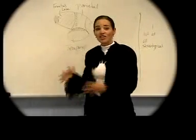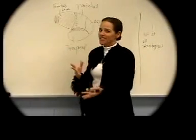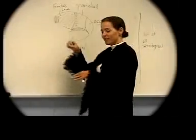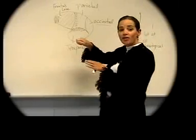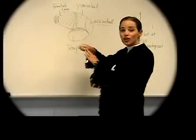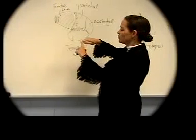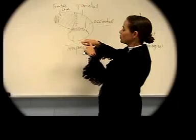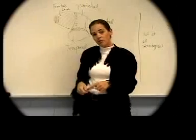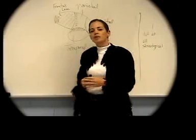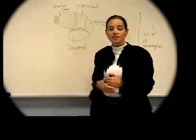If you ever get stumped on a test and can't remember how to think about the brain, you can actually make a brain for yourself with your hand. If you just make a fist, you've created the same kind of diagram for a brain and can think about where the different lobes are located. This part of the hand would be the prefrontal cortex, then the frontal lobe, then the parietal lobe, then the occipital lobe in the back, and the thumb represents the temporal lobe. Hopefully that kinesthetic feedback will help you remember.